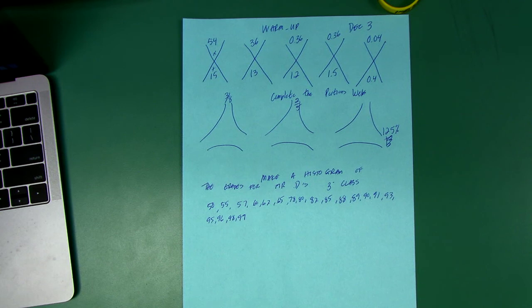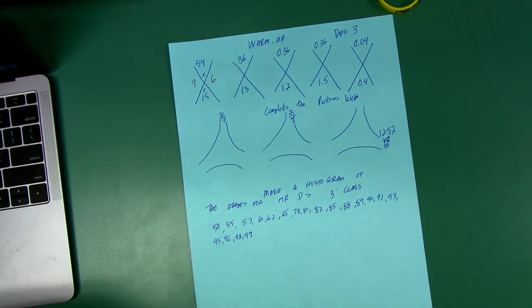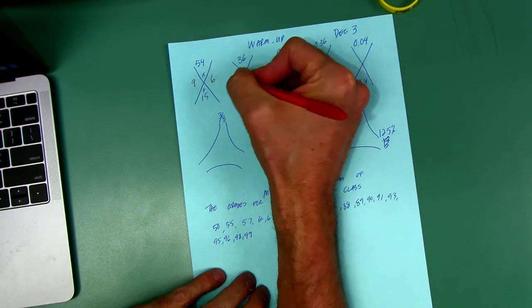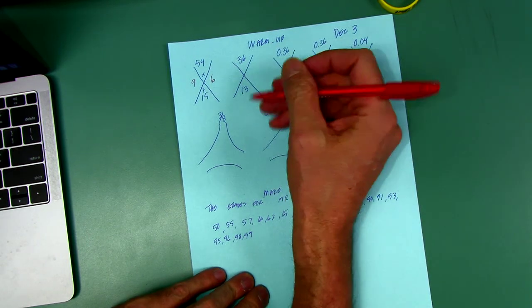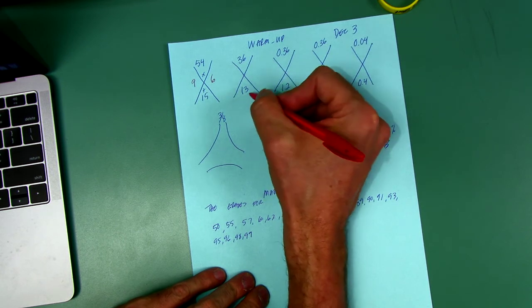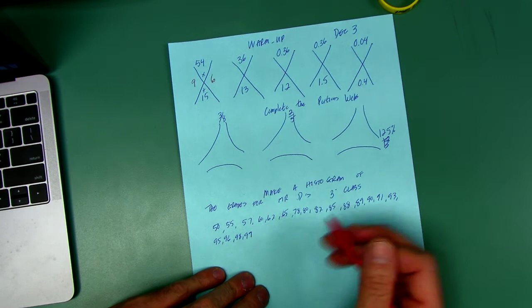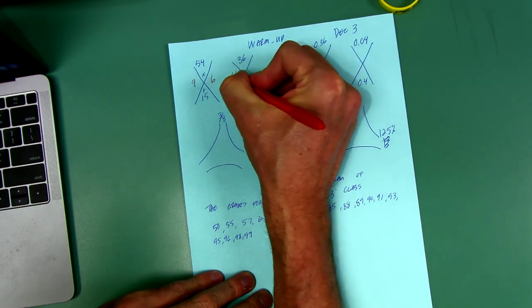All right, here we go. Diamonds, let's do these fast. 54 and 15, 9 times 6 works there, right? 9 times 6 is 54, 9 plus 6 is 15. And 6 times 6 is 36, but 6 plus 6 is not 13, it's 12. Now, 3 times 12 is 36, but 3 plus 12 is 15. Now, 10 plus 3 is 13, but 10 times 3 is 30. We need two numbers that work for both. Which numbers work there? Hopefully you figured out it was 4 and 9, 2 squared and 3 squared.